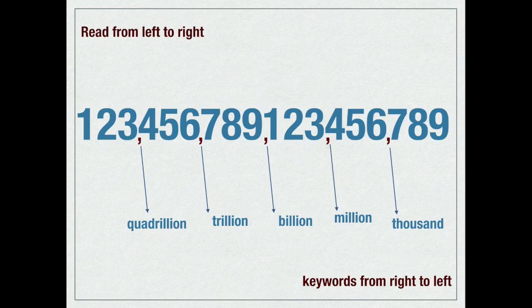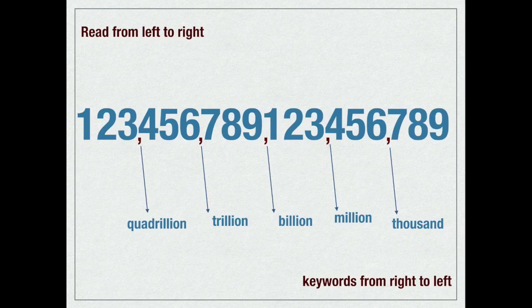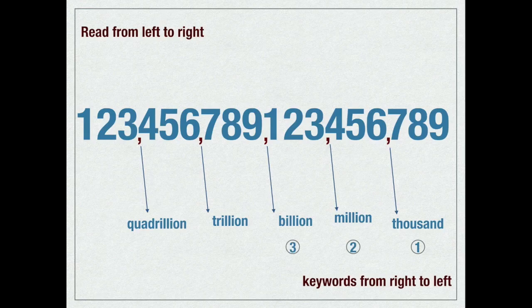Remember, we always start sorting our groups from right to left. The first one, thousand, million, billion, trillion, quadrillion.